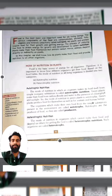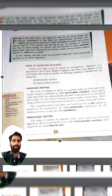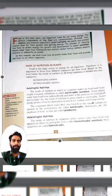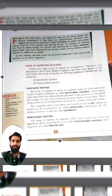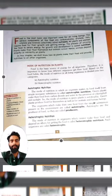Plants make their food themselves, but animals cannot make their own food. Hence, animals depend directly or indirectly on plants.